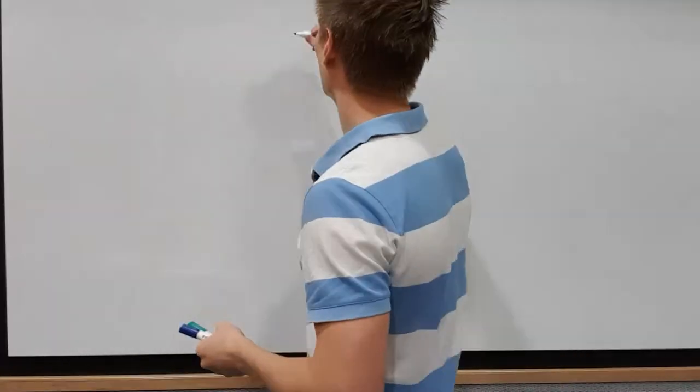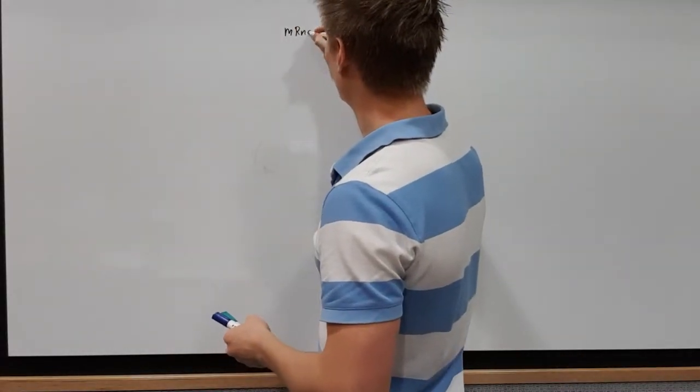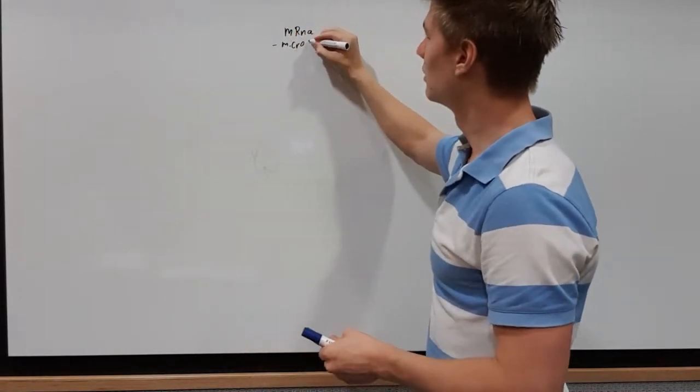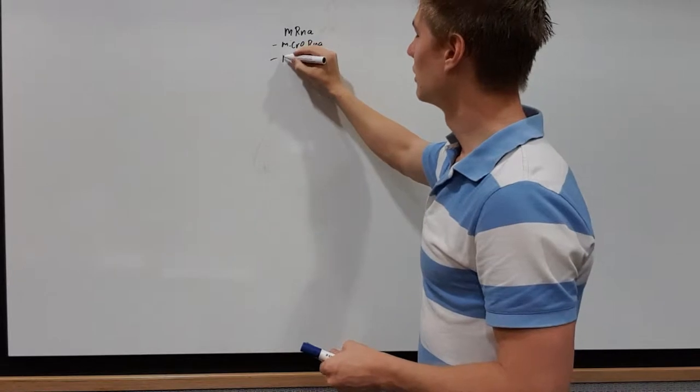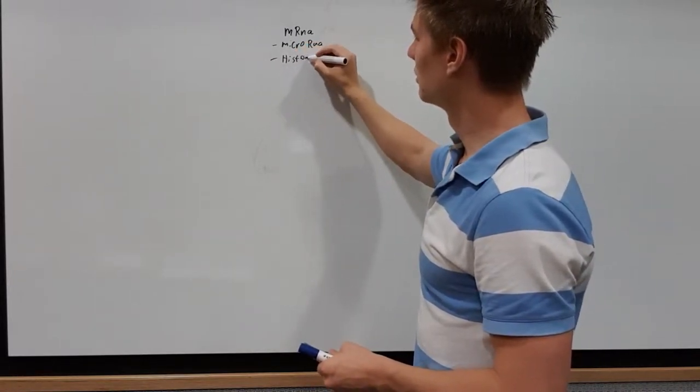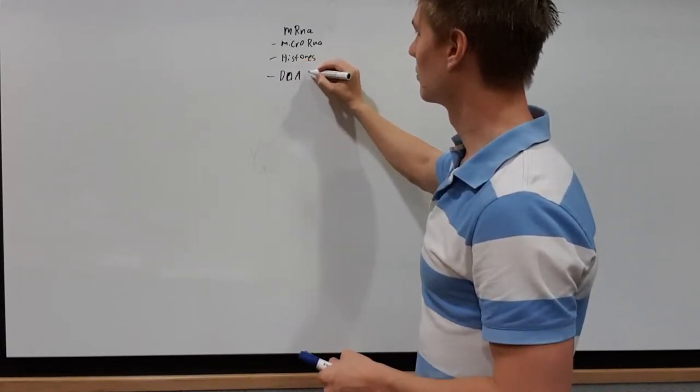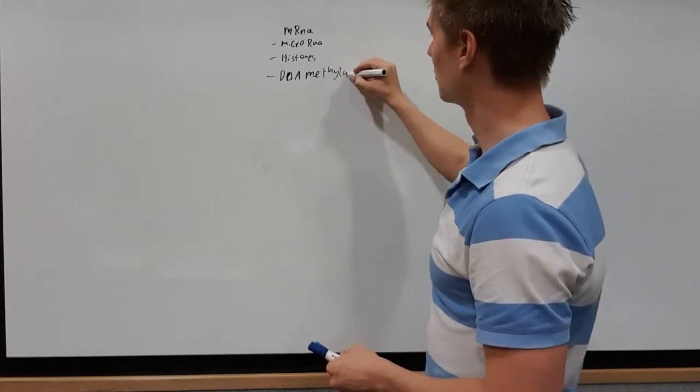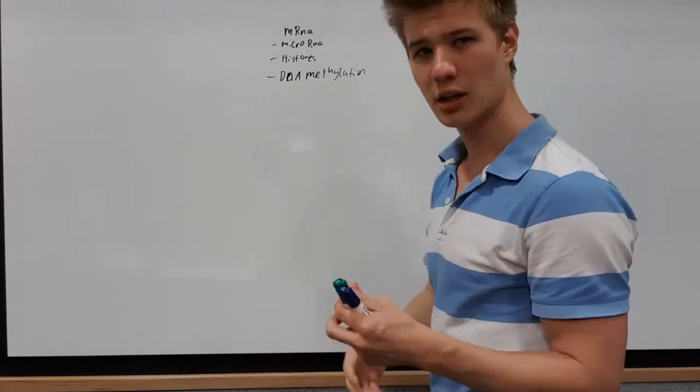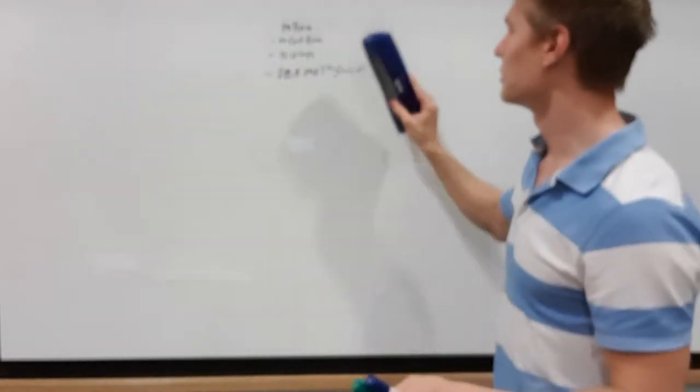Yesterday we discussed the molecular mechanisms that keep that from happening, the molecular mechanisms that make a cell that particular cell type that it represents. So let's have a reminder of what those are. Those are mRNA, microRNA, histones, and DNA methylation.